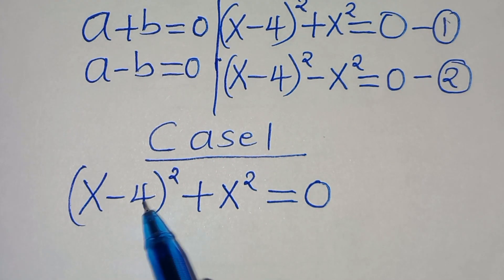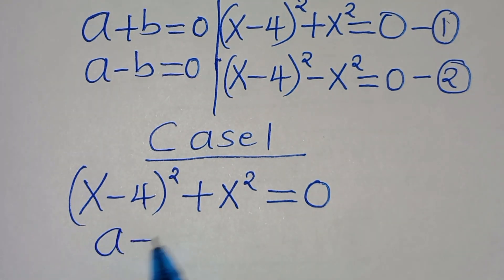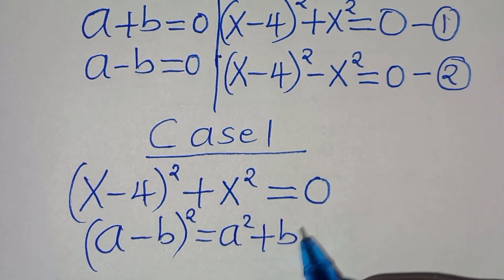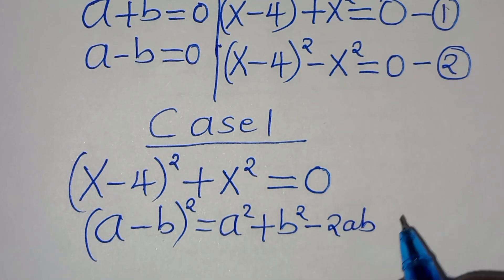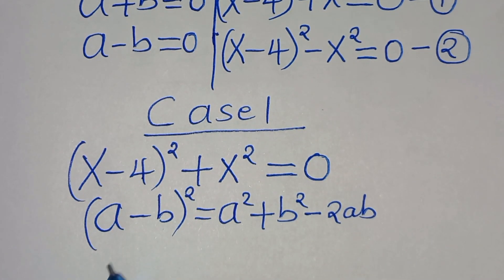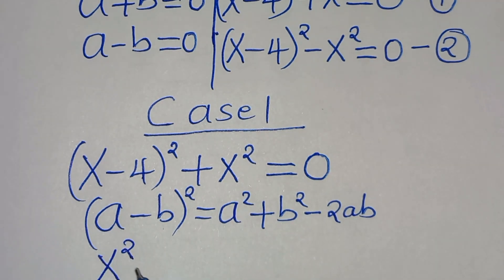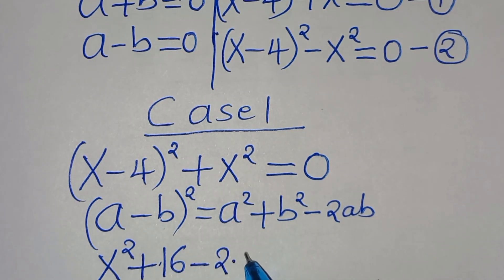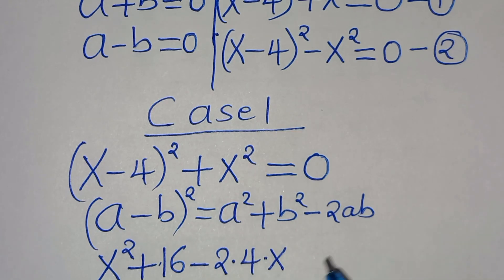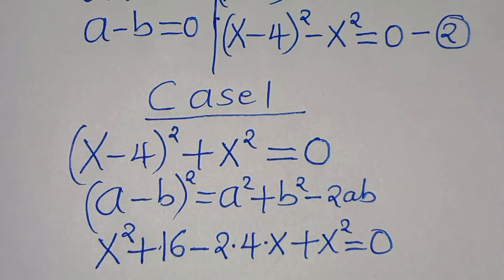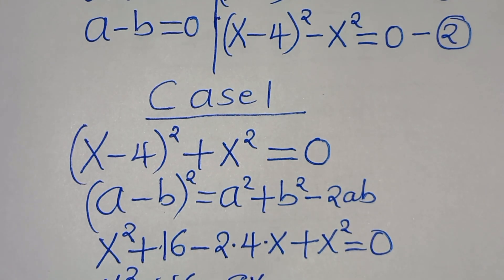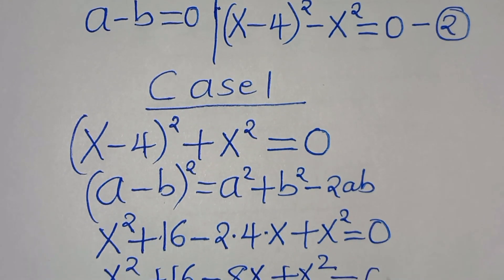We have (x minus 4) to the power of 2 in the form of (a subtract b) squared, which we can express as a squared plus b squared minus 2ab. Applying this algebraic identity, we get x squared plus 4 squared — which is 16 — minus 2 times 4 times x, then plus x squared equals 0. This gives x squared plus 16 minus 8x plus x squared equals 0.